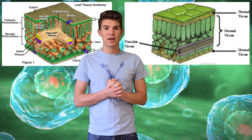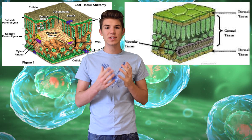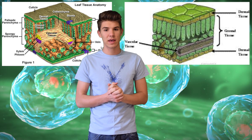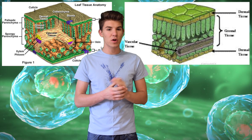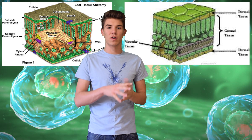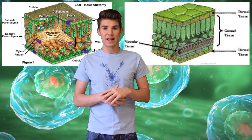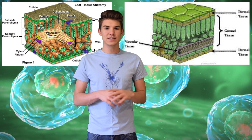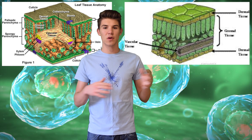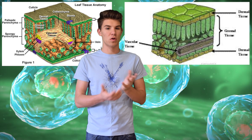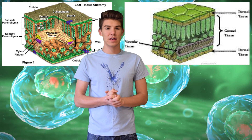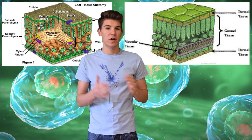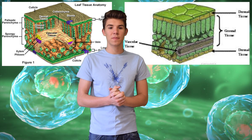The dermal tissue is usually a single layer of cells covering the younger part of a plant. It makes a very waxy layer called the cuticle that prevents water loss. These tissues are generally around the young epidermis and lack chloroplasts. Basically all they do is help prevent water loss, which is very important.